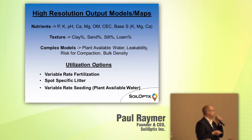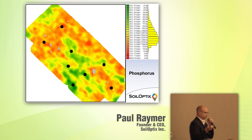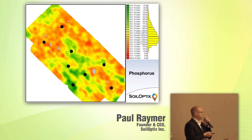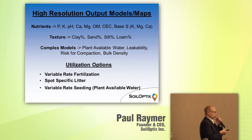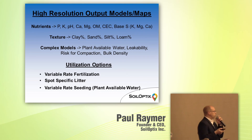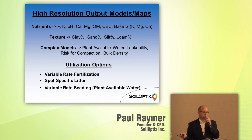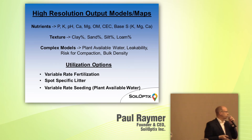Here's an example of our high-resolution output — that particular one is organic matter. Our outputs cover all the various properties a grower would want to know. The strength of the tool is identifying texture — clay, sand, and silt. We can also do complex models: plant-available water, bulk density, and more. Applications include variable rate fertilizer, spot-specific litter based on organic matter in the field, and variable rate seeding based on plant-available water.